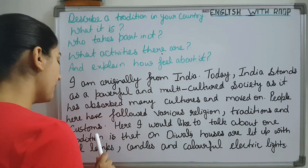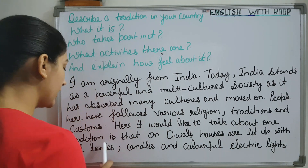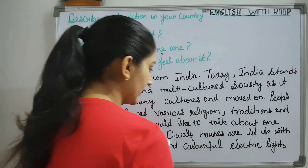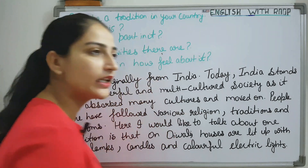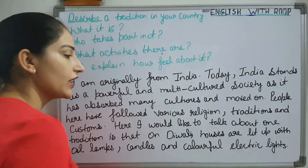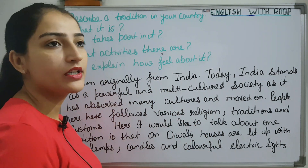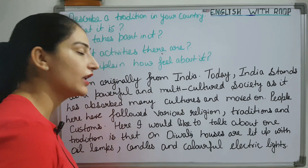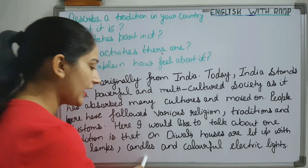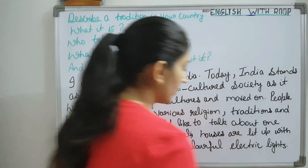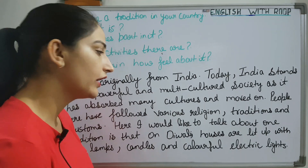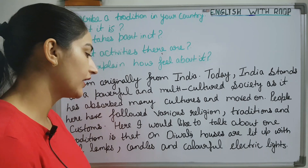Here I would like to talk about one particular tradition — on Diwali, what do people do? Houses are lit up with oil lamps, candles, and colorful electric lights. Every year every Indian does these things.